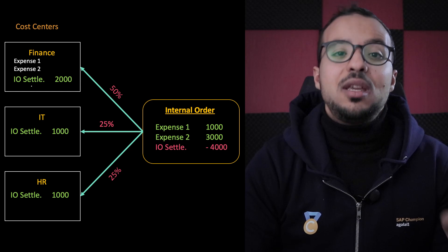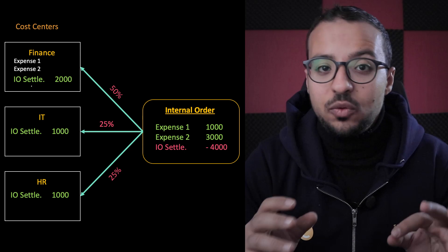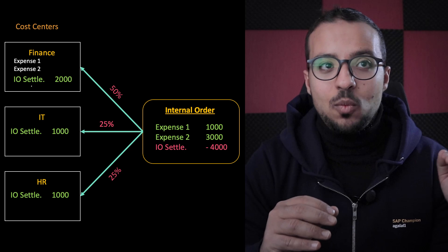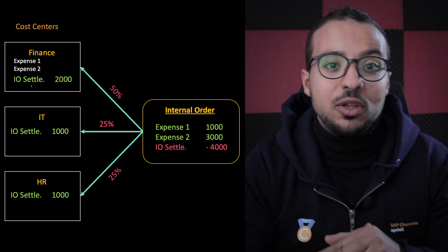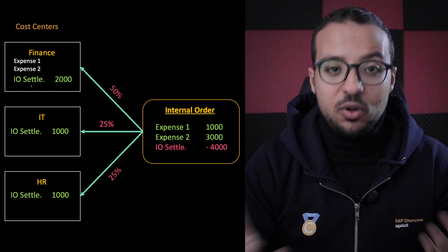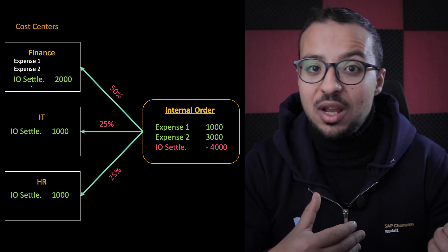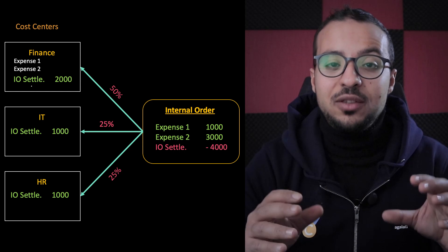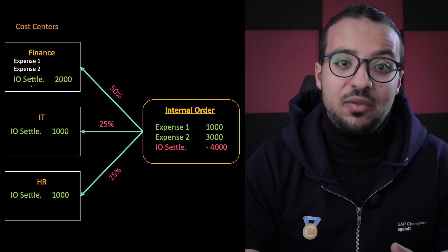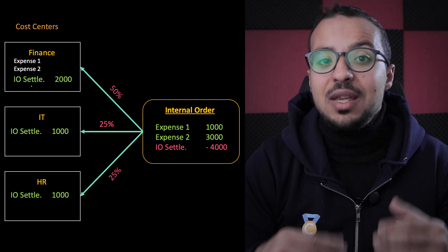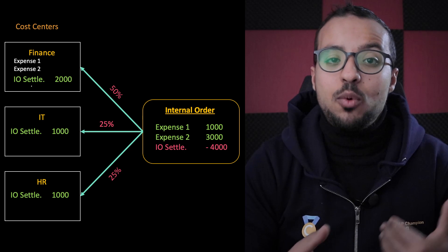When we settle the internal order, SAP posts a credit from the internal order to the cost center. This is a very good feature because when we post a credit, we did not touch the original expense lines posted to the internal order. So in the future, even after the order settlement, if we want to report on the expenses spent for a historical event, we can easily do this because the original expense lines are already there — SAP never deletes any financial figures. So we can easily compare between historical events and current events through the reports of the internal order.